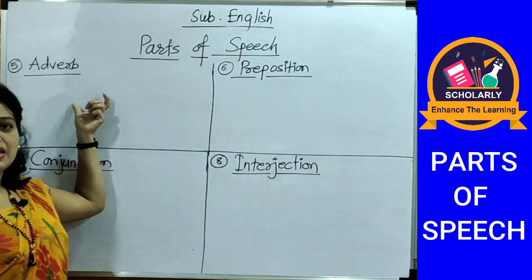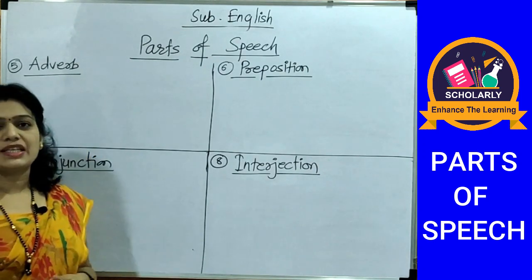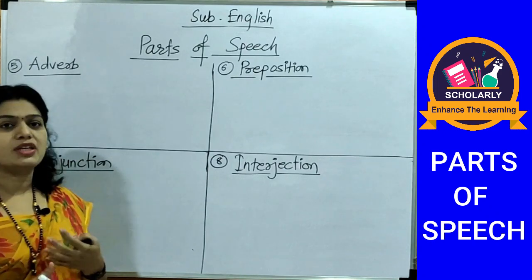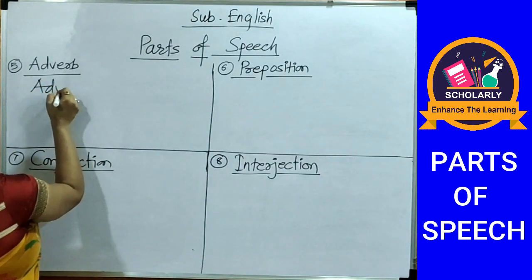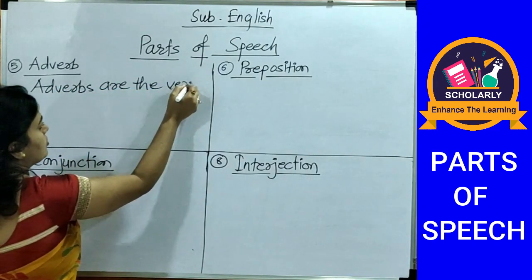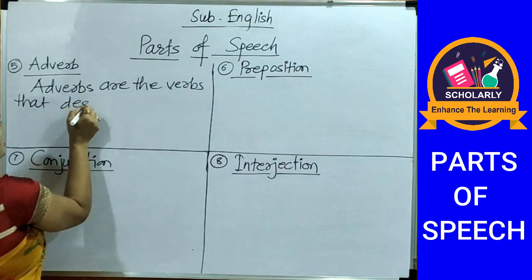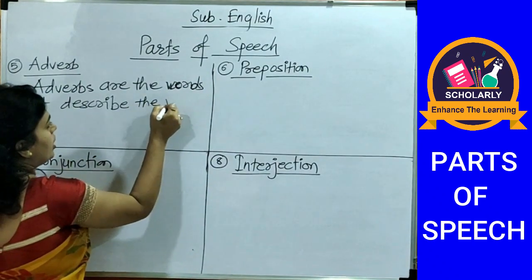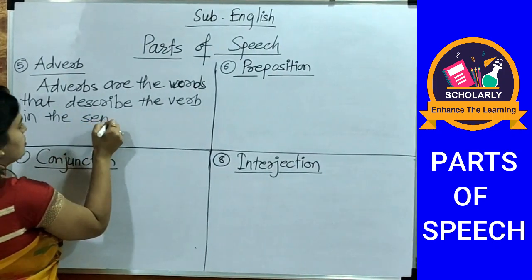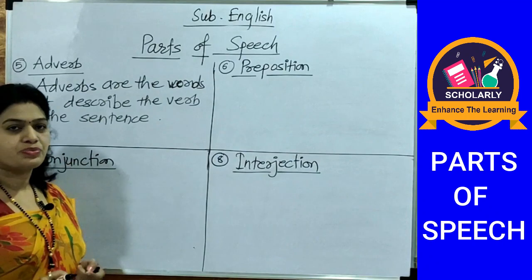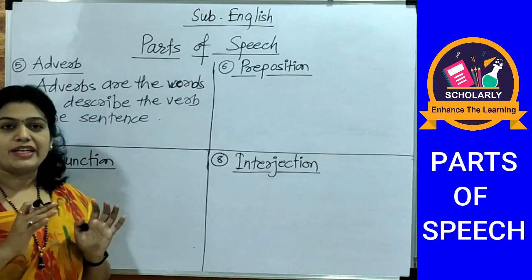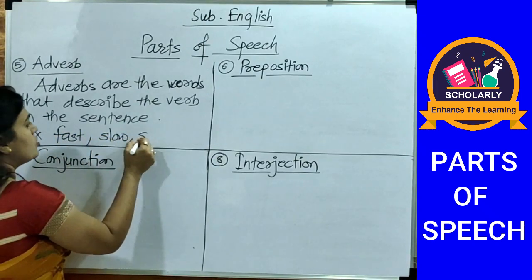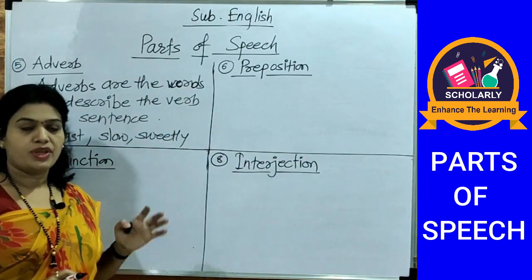The fifth part of speech is adverb. Just like adjectives describe the noun in the sentence, adverbs describe the verb in the sentence. For example, 'she sings sweetly' — sweetly is an adverb. Examples of adverbs are: fast, slow, sweetly, smoothly.